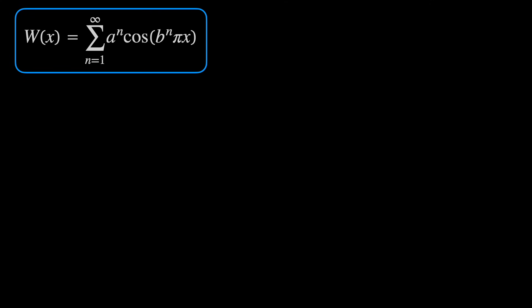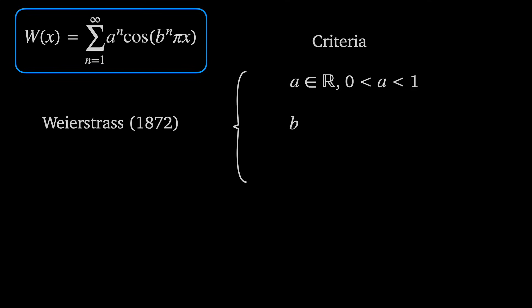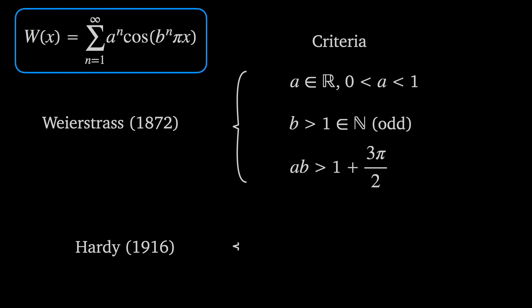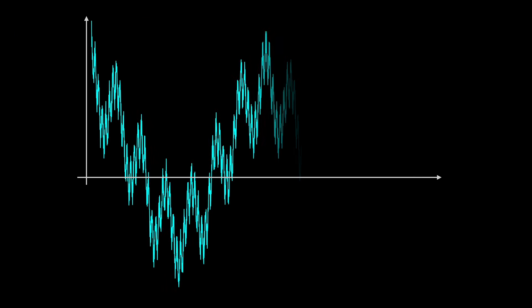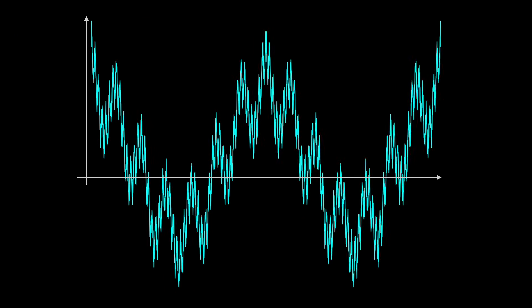Weierstrass himself had slightly different conditions on a and b in his original paper. Because he considered his function to be a Fourier series, b must be an integer — he also restricted b to the odd integers, which as far as I can tell is useful in the proof. What Hardy did was refine these criteria and come up with a more generalized Weierstrass function. And so there we have it: a function made out of the sum of continuous differentiable functions that is itself continuous but not differentiable anywhere on the real line.